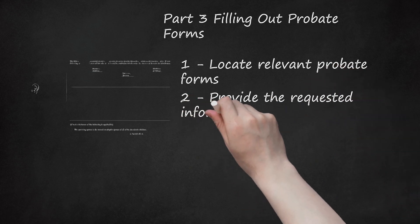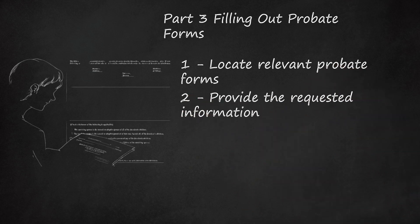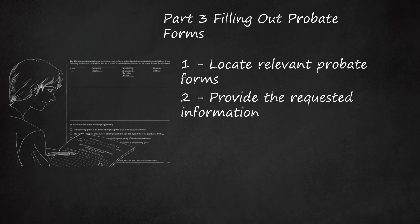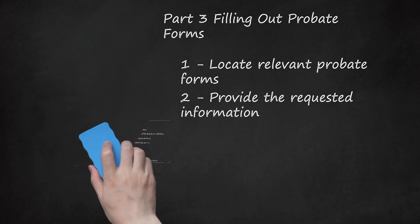Step 2: Provide the Requested Information. Typically, the first forms that an executor or PR will file with the court is a petition for probate, appointment of a personal representative, and letters testamentary or letters of administration. These forms begin the probate process and grant the PR legal authority to act on behalf of the decedent's estate. The forms may require: decedent's full name (including any other names used), decedent's address, date of birth, date of death, personal representative's name, address, and telephone number, and number and names of heirs.